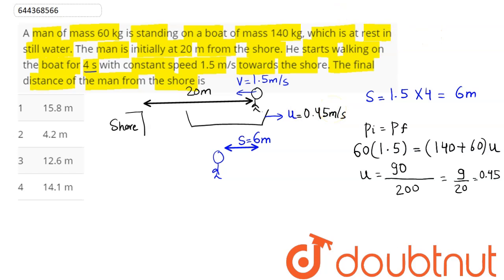Hence in time interval of 4 seconds, this boat moves by a distance of UT, where U here is 0.45 and time here is 4, which on calculation comes out to be 1.8 meters per second. Hence the total distance...